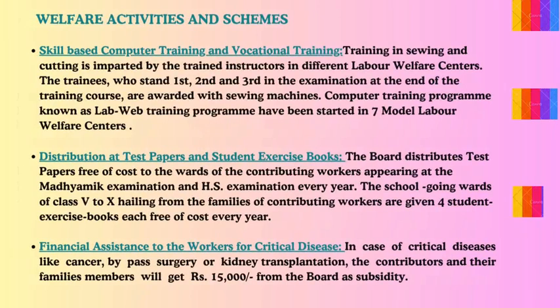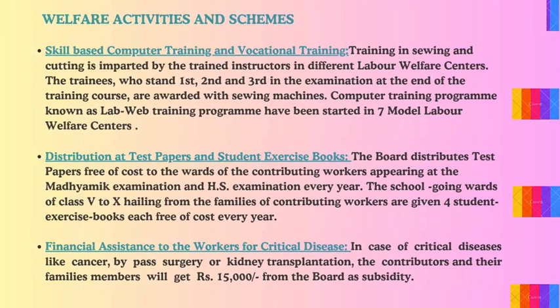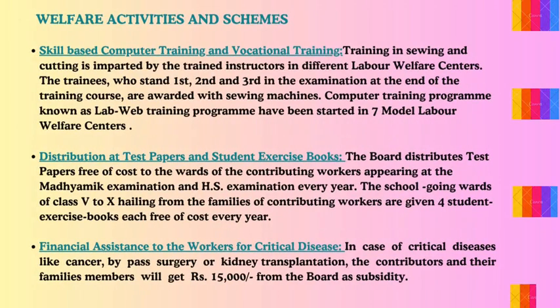Skill-based computer training and vocational training: sewing and cutting training is imparted by trained instructors in different labor welfare centers. Trainees who stand first, second, and third in the examination at the end of the training course are awarded sewing machines. A computer training program known as the Lab Web Training Program has been started in seven model labor welfare centers. Distribution of test papers and student exercise books: the board distributes test papers free of cost to wards of contributing workers appearing at the Madhyamik and HS examinations. School-going wards of classes 5 to 8 from families of contributing workers are given four exercise books each free of cost every year. For critical diseases like cancer, bypass surgery, or kidney transplantation, contributors and their family members receive 15,000 rupees from the board as subsidy.